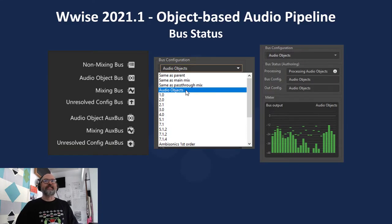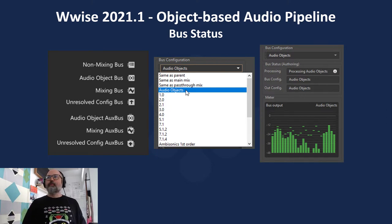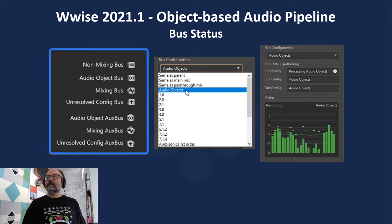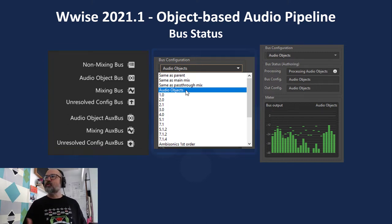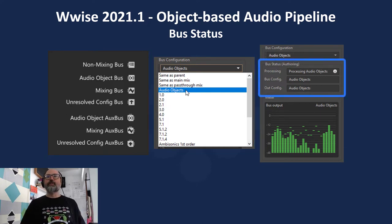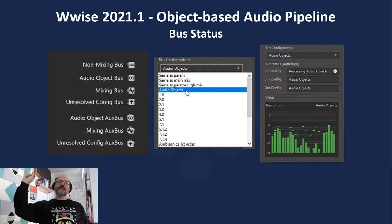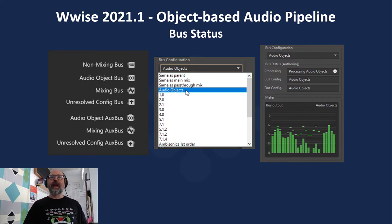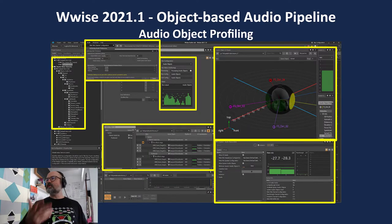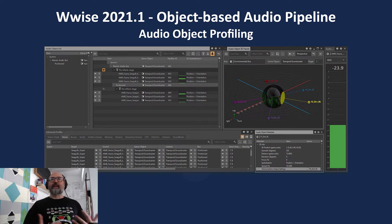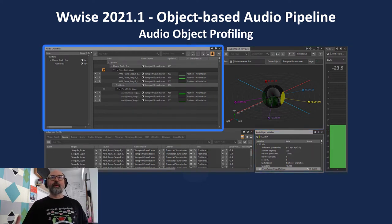Before we do that — bus status. We've added the ability to understand what's happening in an audio bus. We have a set of icons that represent different configurations in the master mixer hierarchy, and we have some new configurations I'll talk through, as well as bus status so you can understand: is a bus mixing, is it processing, are audio objects being passed through? There's also a whole new suite of profiling views that help us understand what's happening with audio objects from different perspectives — a 3D view, metadata, and flow through the pipeline.